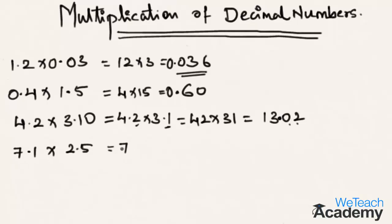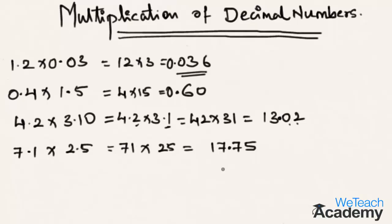Let's take one more example: 7.1 multiplied by 2.5 equals 71 multiplied by 25, which equals 1775. In the question there are two digits after decimal points, so the result should also have the decimal point before two digits from the left — that is 17.75. Hope you understood the concept of multiplying decimal numbers. Do like and subscribe to bteachacademy.com. Thanks for watching, have a nice day!